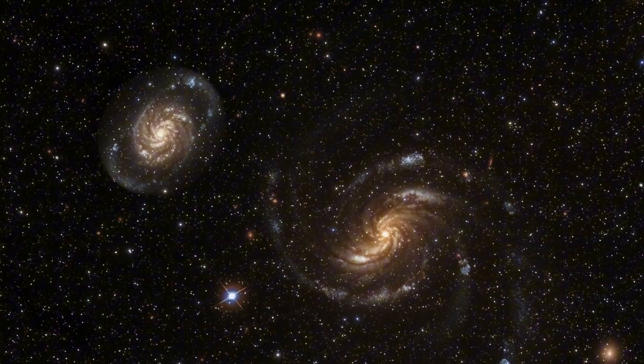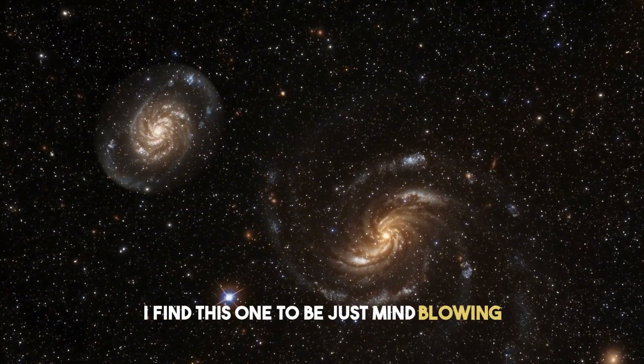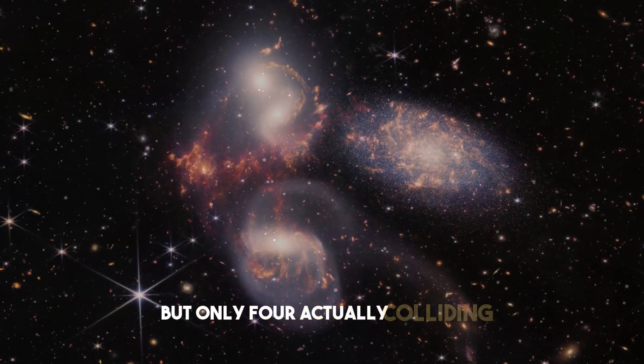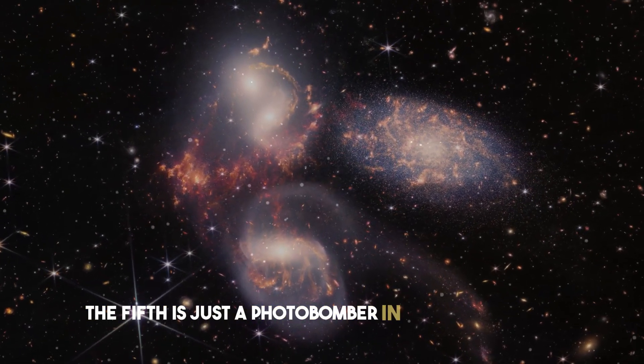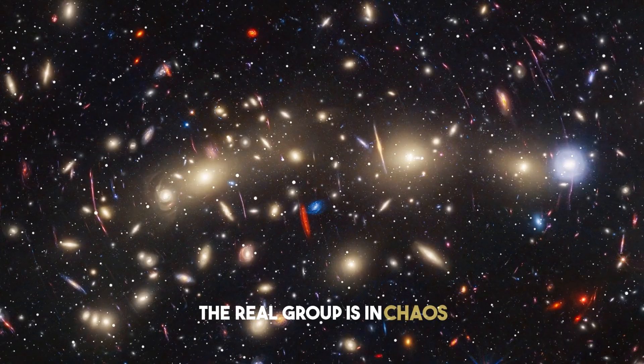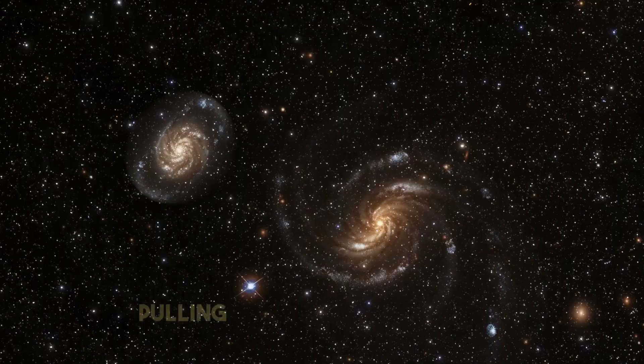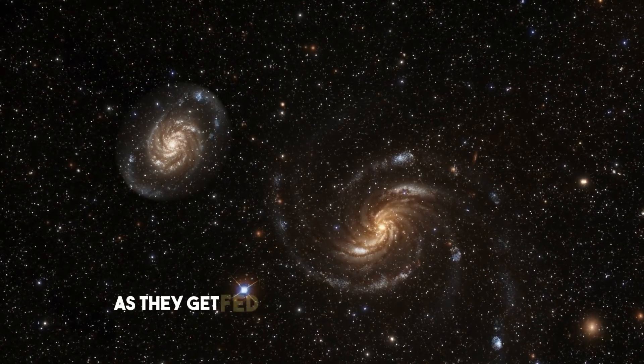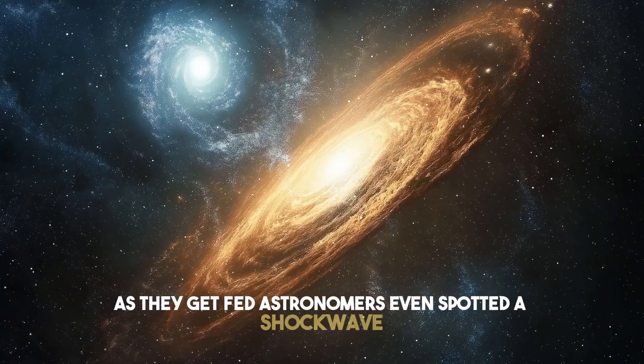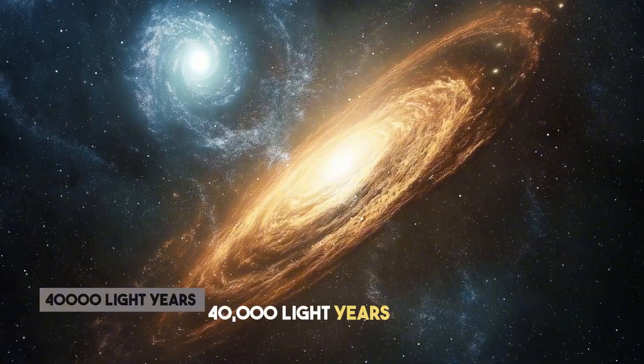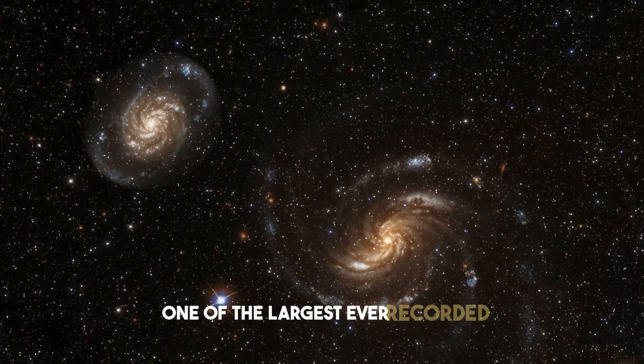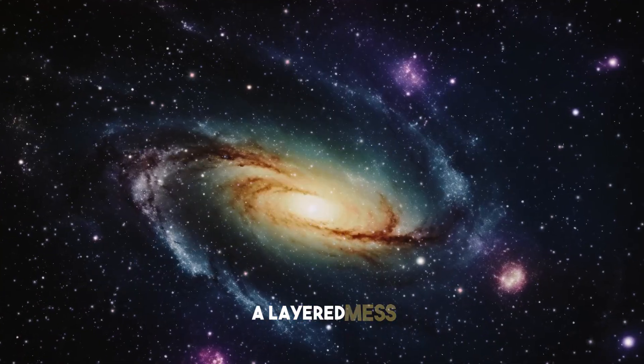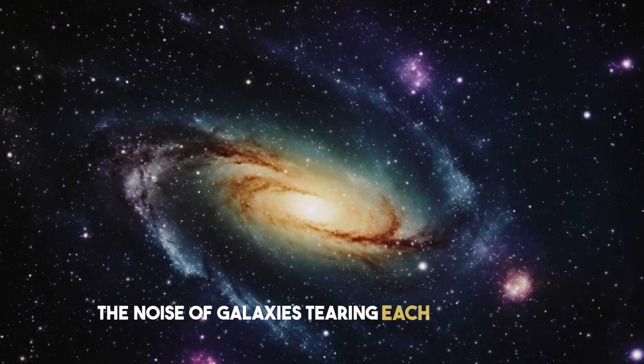Next up is Stefan's Quintet. I find this one to be just mind-blowing. Stefan's Quintet looks like five galaxies hanging out, but only four are actually colliding. The fifth is just a photobomber in the background. The real group is in chaos. Galaxies smashing together, pulling out streams of stars and gas, while at least two hidden black holes flare brighter as they get fed. Astronomers even spotted a shockwave 40,000 light years wide, one of the largest ever recorded. When turned into sound, it's just as chaotic as you'd expect. A layered mess. The noise of galaxies tearing each other apart.